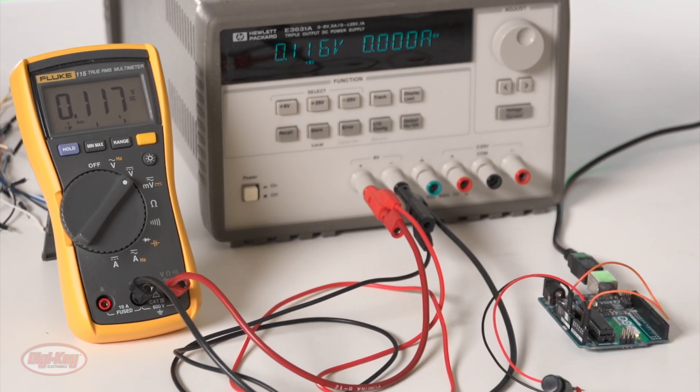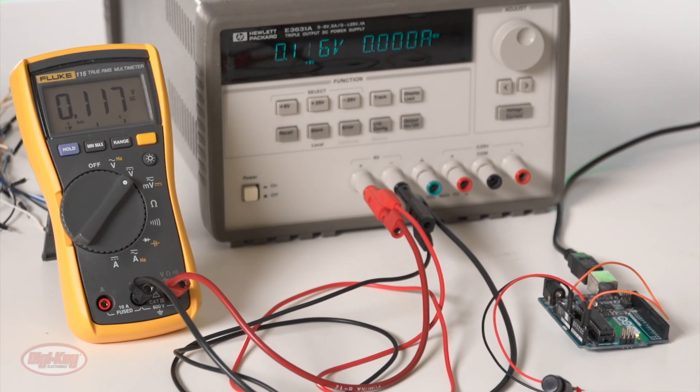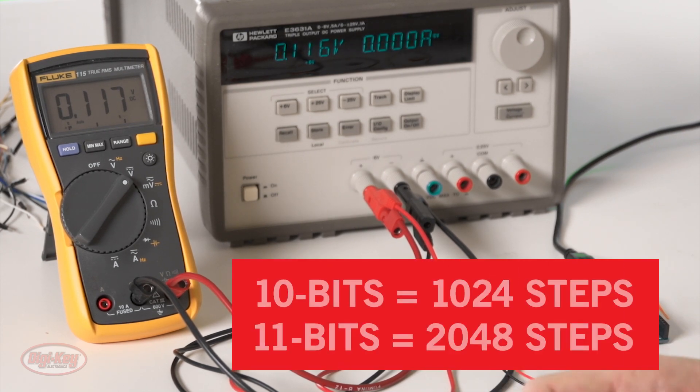Now, what happens if you need more from your ADC than you get with the one in your microcontroller? There are a few factors to consider. One is resolution, which determines your step size. But to double the resolution, you only need to increase the bit count by one.